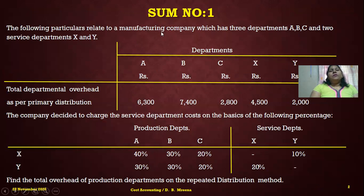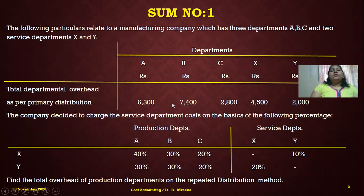The following particulars relate to a manufacturing company which has three production departments A, B, and C, and two service departments X and Y. The respective overheads as per the primary distribution summary were given: 6,300 for A, 7,400 for B, 2,800 for C, 4,500 for X, and 2,000 for Y.